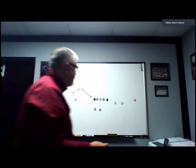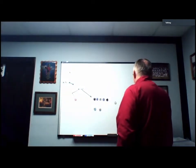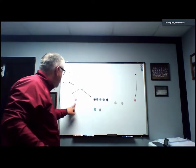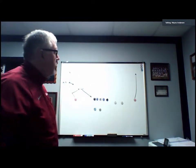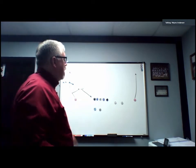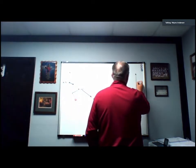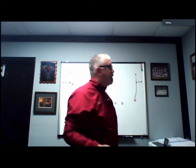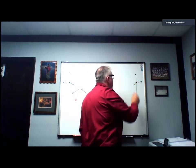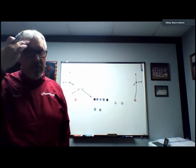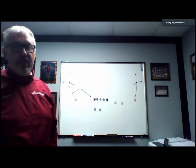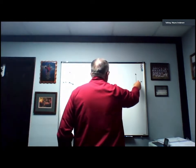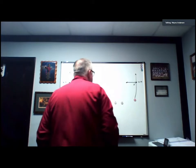Backside one has the same route in the sense that he is like front side one — outside releasing and between the numbers and the sideline. If he gets to that 10 to 12 yard area and he cannot beat the corner over the top, he is going to hook up and find the open window back to the quarterback. His other option: if it's man coverage and he gets to that 10 to 12 yard landmark, he is going to convert that route into an in route.